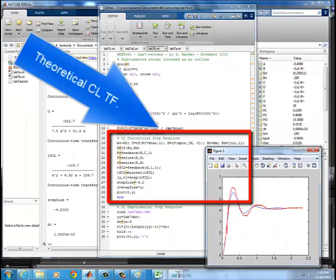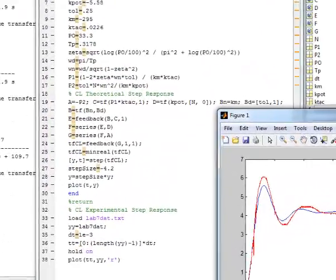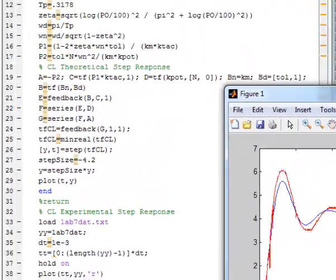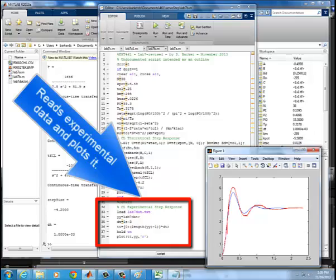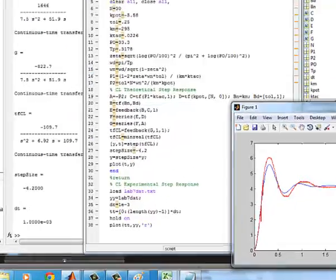This part is where the theoretical closed-loop transfer function is developed. This part reads the experimental data and plots it.